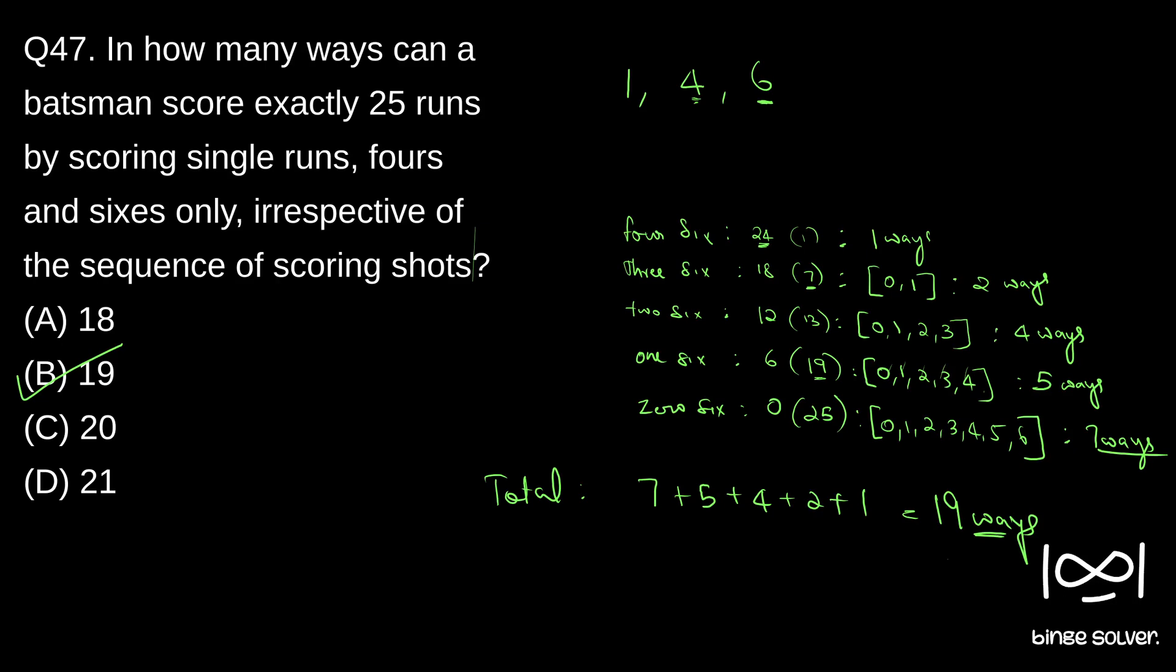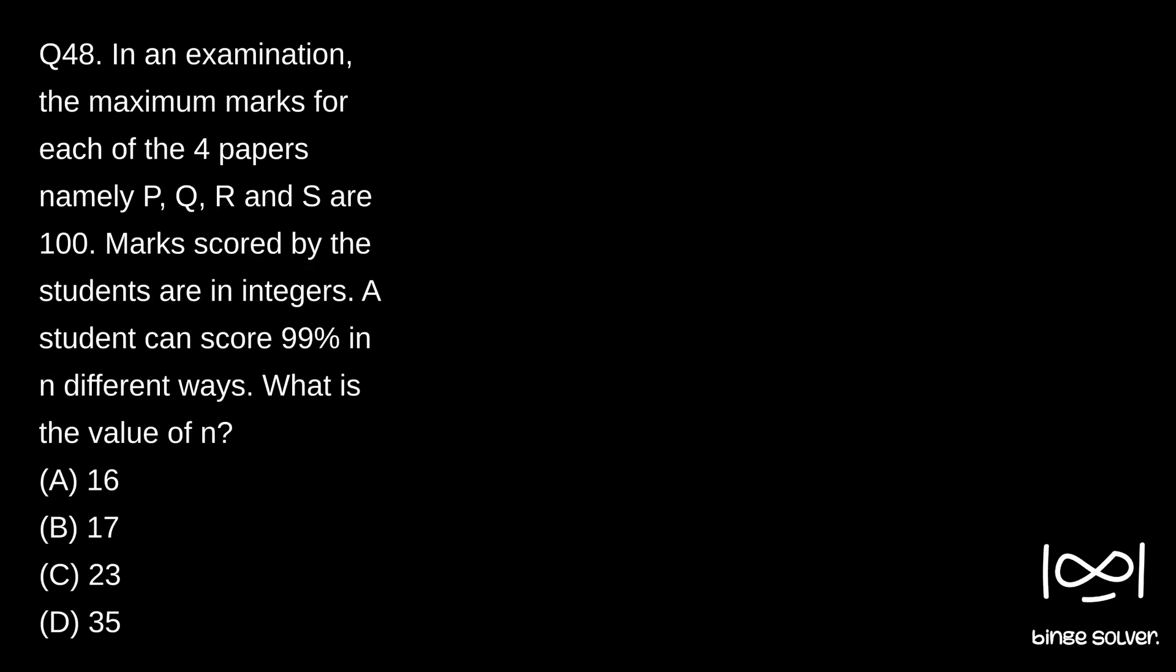Next question, question 48. In an examination, the maximum marks for each of the four papers, namely P, Q, R and S are 100. Marks scored by the student are in integers. A student can score 99 percentage in N different ways. What is the value of N?